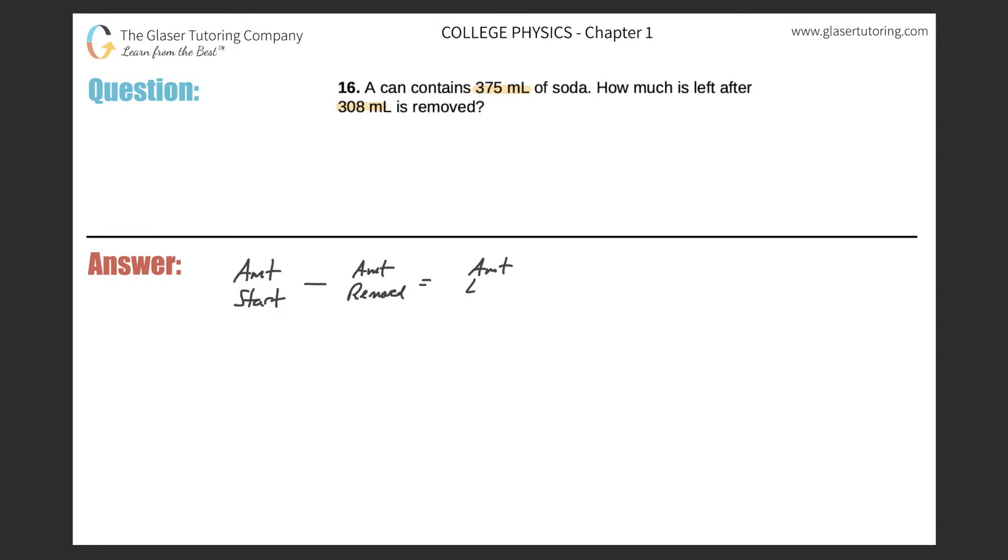Cool, so we can just plug these in. It says it initially contains 375 milliliters—that's the initial amount. Then it tells us that we removed 308 milliliters. And finally, it asks how much is left after that's removed.